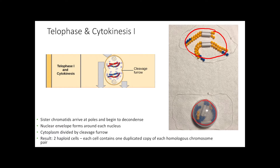Those two daughter cells, though, only have one set — they are haploid. They only have half of the genetic information in each cell. They have sister chromatids, but that is still just half of the genetic information in each cell. So by the end of meiosis I, we end up with two daughter cells that are haploid. We are done with our first round of cell division.